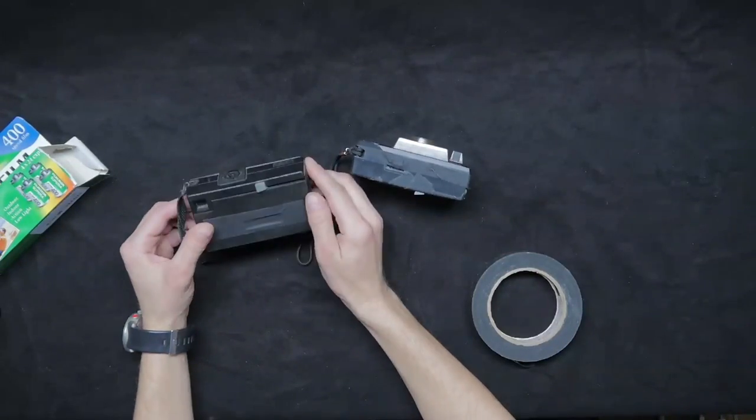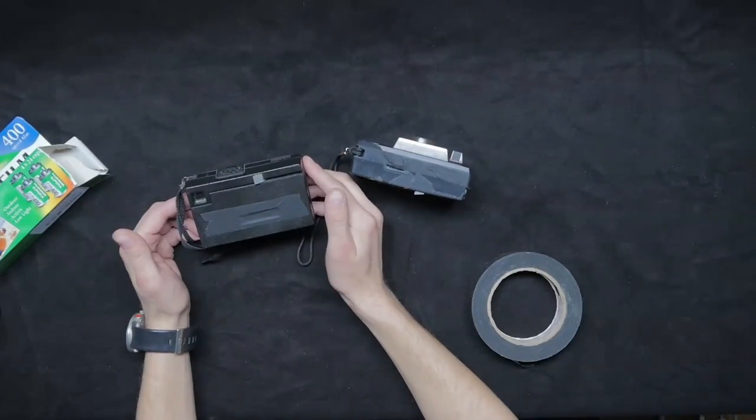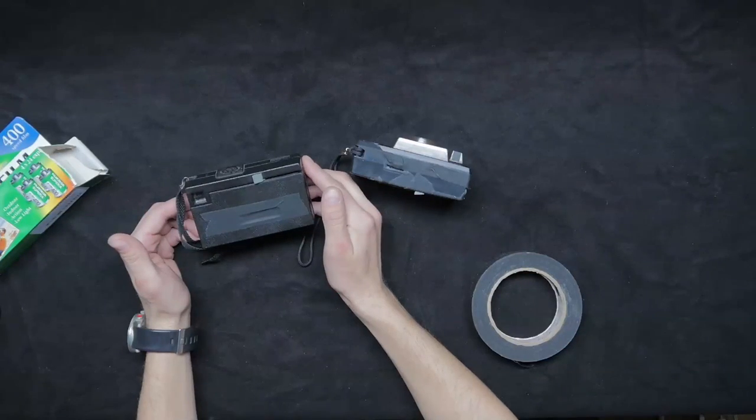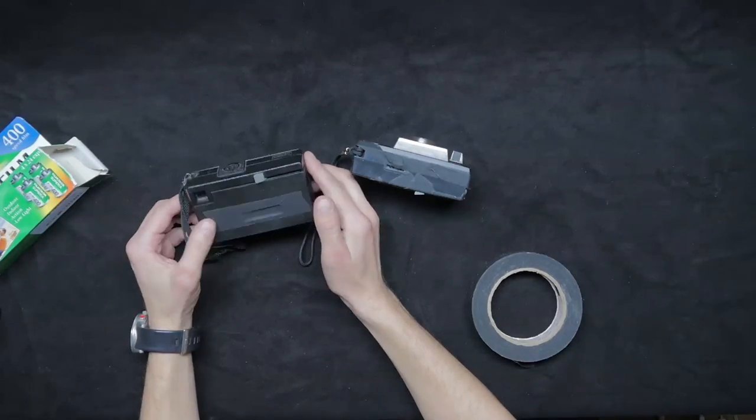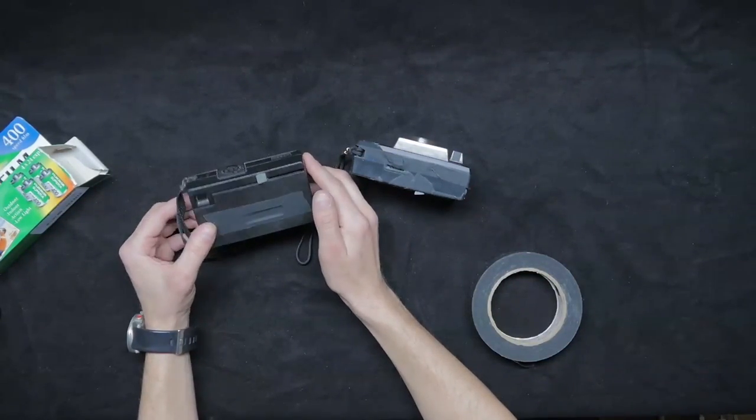Before you begin, you're going to want to make sure that your Instamatic camera works. If the shutter is rusted shut, then don't go through all this stuff, or it's just going to be a tremendous waste of your time.